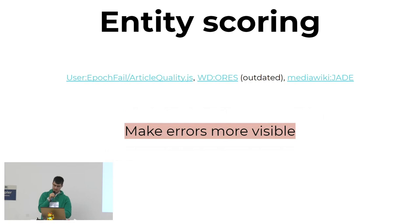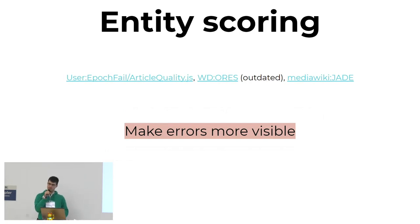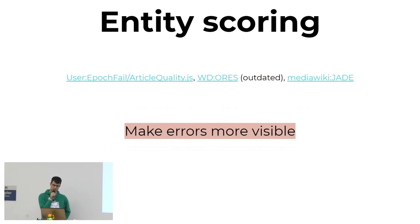There's also entity scoring. Instead of scoring an edit — the change that it made — you score the whole revision. There's the same quality measure that Lydia mentioned at the beginning of the conference. It's a user script that gives you a score of like one to five of what the quality of the current item is.